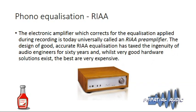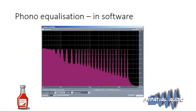Most phono amplifiers implement RIAA correction within the circuitry of the preamplifier, and whilst there are some very good units, the best are very expensive. We believe it would be very good to implement this correction in the digital domain within Stereo Source. Being in software, you can do it very accurately — you're not relying on real-world capacitors and resistors that change with time and temperature — and you can get very accurate RIAA correction.